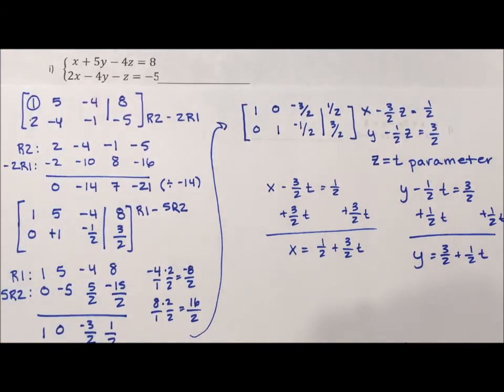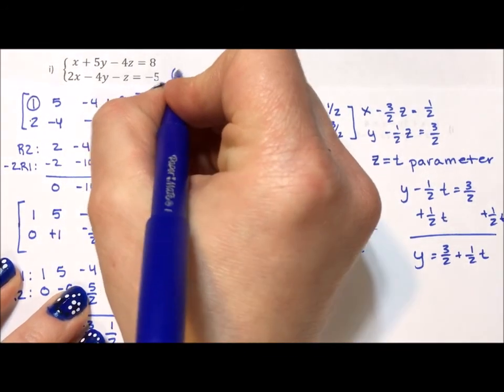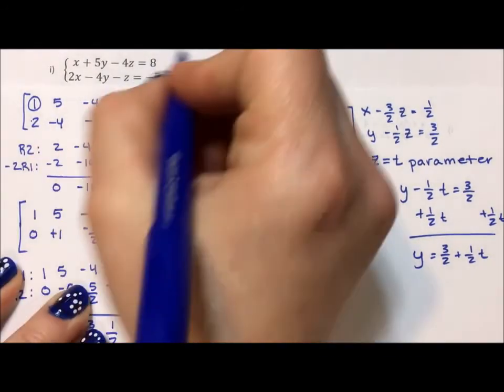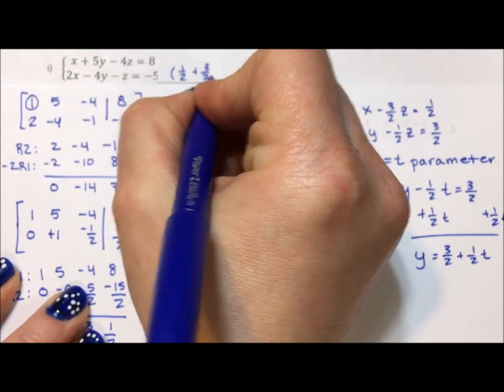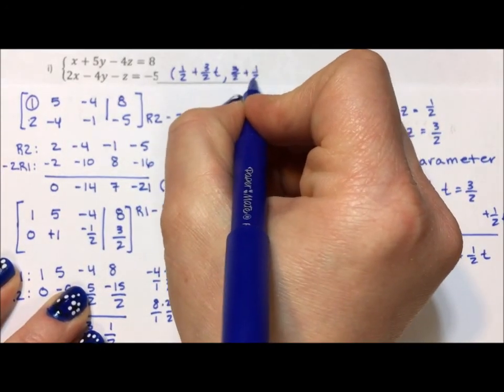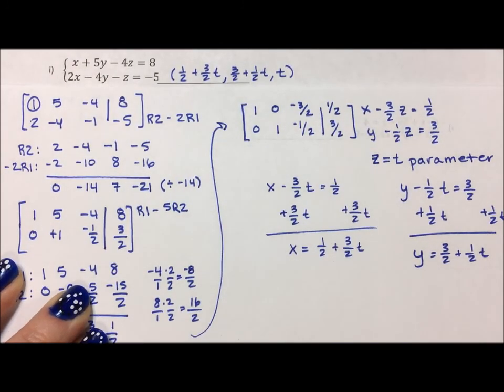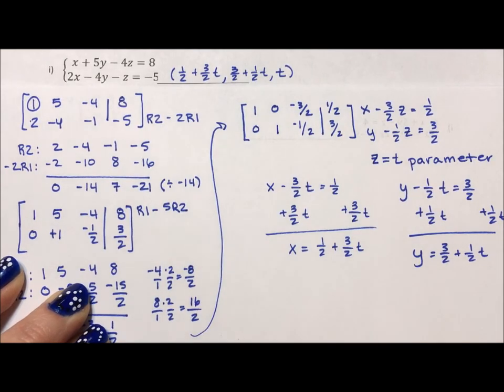So now we have enough to write our final answer. Our final parametric answer is going to be 1 half plus 3 halves t, comma, 3 halves plus 1 half t, comma, t. We have all three variables acknowledged in our final answer.